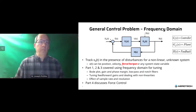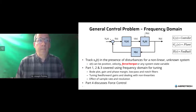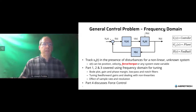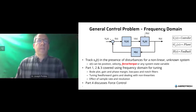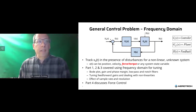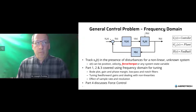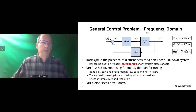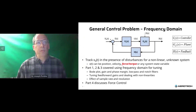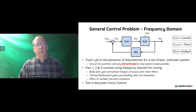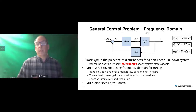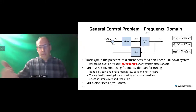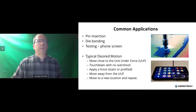We're going to talk about the general control problem, and today we're going to focus on the output variable of interest being force. In previous webinars, we talked about position and velocity as the interesting state variable. We have a compensation scheme GC(s), a plant GP, and some feedback mechanism H(s). In Webcast 1 we looked at Bode plots, gain and phase margin, and notch filters. Webcast 2 covered feed forward gains and nonlinearities. Webcast 3 covered sample rate and resolution. Now we move to controlling force.